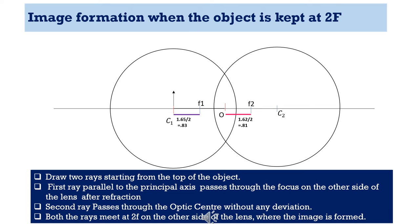Now consider two rays starting from the top of the object. The first ray parallel to the principal axis passes through the focus on the other side of the lens after refraction. The second ray passes through the optic centre without any deviation. Draw these two lines and make sure that they are bending at the middle of the lens — to confirm this we can draw a straight line joining the ends of the lens. Both rays meet at 2f on the other side of the lens, where the image is formed.